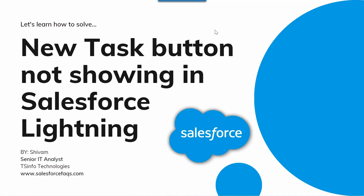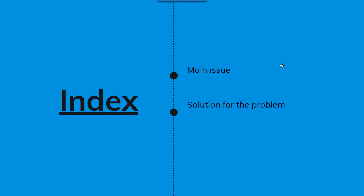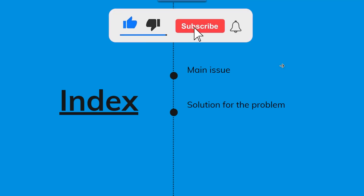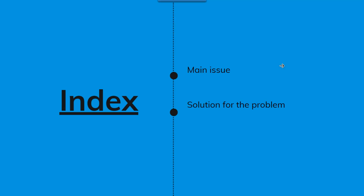Hello and welcome everyone. In this video tutorial we will discuss how we can solve the issue where the new task button is not showing in Salesforce Lightning edition. We will start by discussing the main issue — why the new task button is not showing in the activity tab — and then discuss the solution of how we can add the new task button in Salesforce Lightning edition.